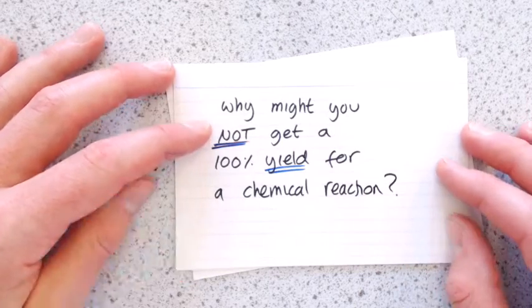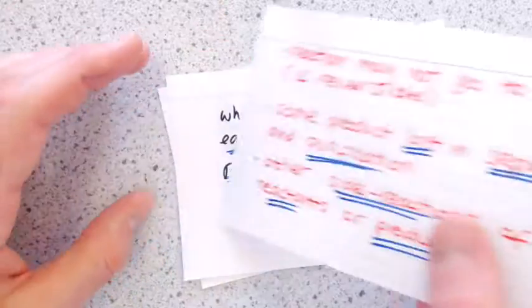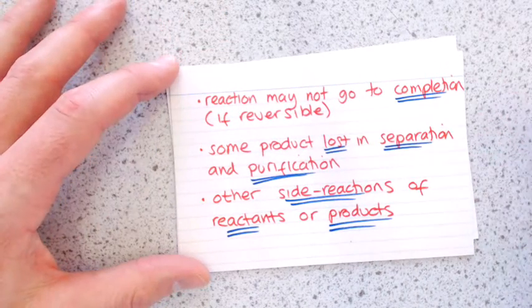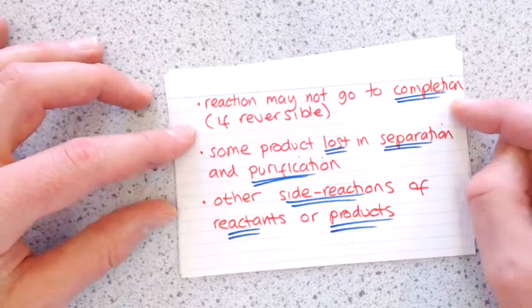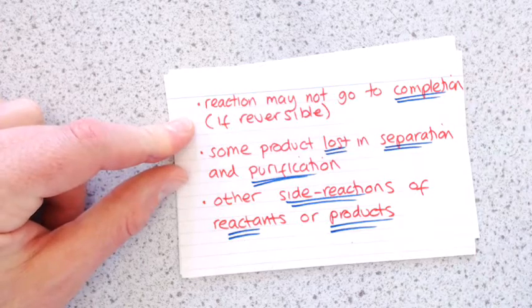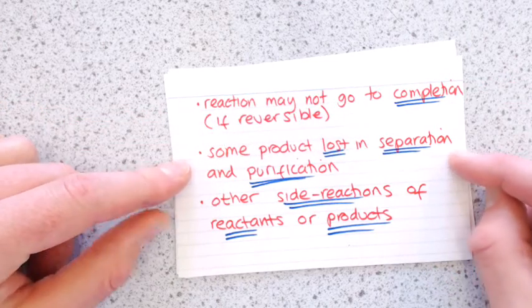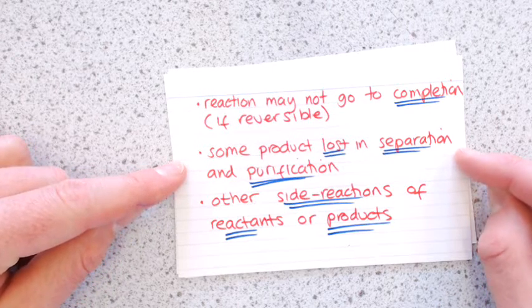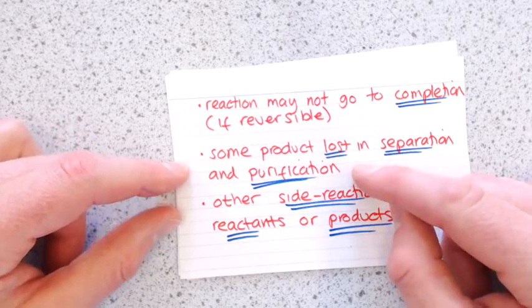Why might you not get 100% yield for a chemical reaction? So there's three key things for you to remember here. It could be that the reaction hasn't gone to completion, which is particular if it's a reversible reaction. Some of the products might have turned back into reactants again. It could be that you've lost some of your material in trying to purify it. So in the separation stages or in the purification step, you lose a little bit of it.